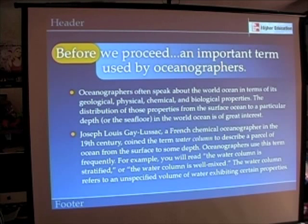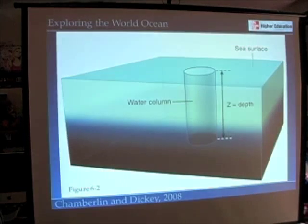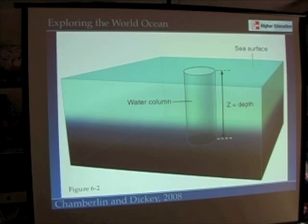Before we go further, we need to talk about an important word that oceanographers use — one they've used for over the last hundred years or so. In the 19th century, a French oceanographer, Joseph-Louis Gay-Lussac, coined the term 'water column' to describe water from its surface to a particular depth. It's just an imaginary column of water. If you look up at the ceiling and imagine that as the surface of the ocean and let your eye fall down to the floor — the floor of the ocean — your eye has circumscribed what we call the water column. Oceanographers use that word often because it's a convenient way to describe the change in properties like temperature or salinity, or even the distribution of organisms from the surface to a particular depth.